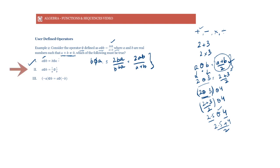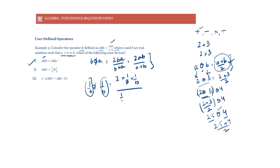What about (1/a) φ (1/b)? Substituting, we get 2 · (1/a) · (1/b) / (1/a + 1/b) = (2/ab) / ((a + b)/ab) = 2 / (a + b). Is this the same as 2ab / (a + b)? No. So a φ b ≠ (1/a) φ (1/b).